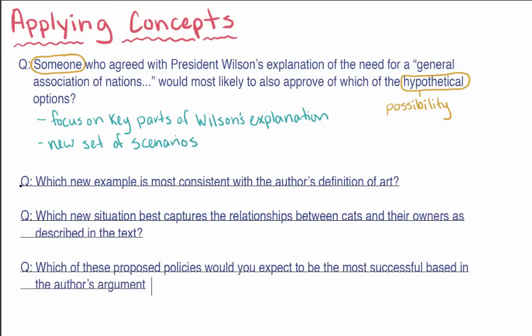Another way that a question can ask you to go beyond the text is by giving you new information to consider. This could be a fact that was not mentioned in the passage, or new information that came to light after the passage was written. Let's take a look at an example of this type of question, which asks you to integrate new information.